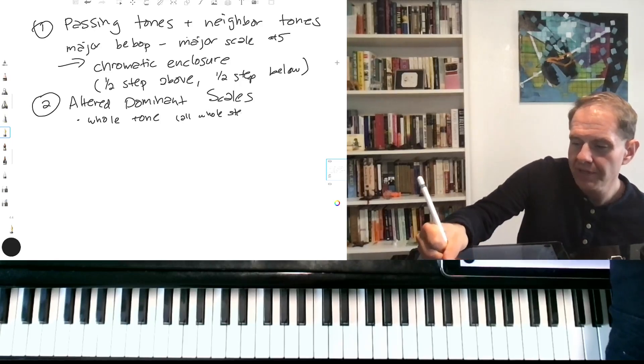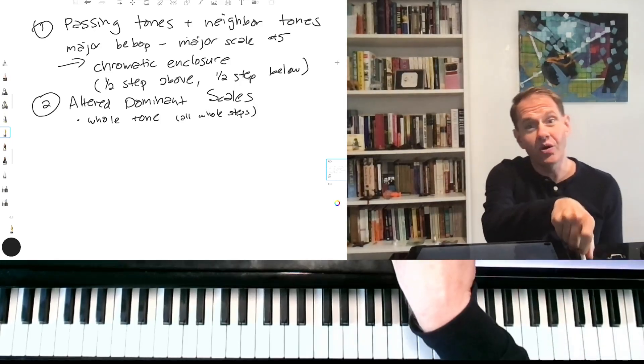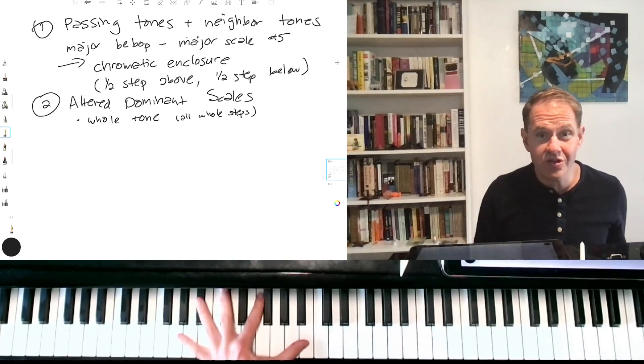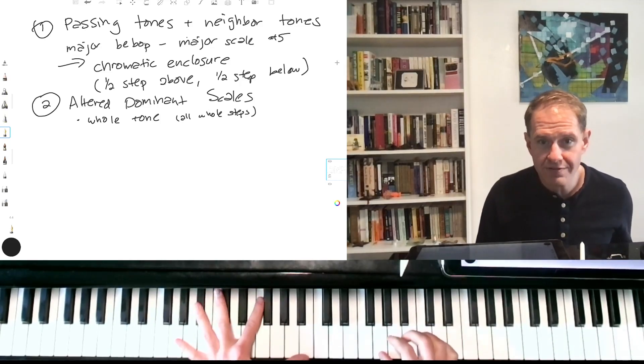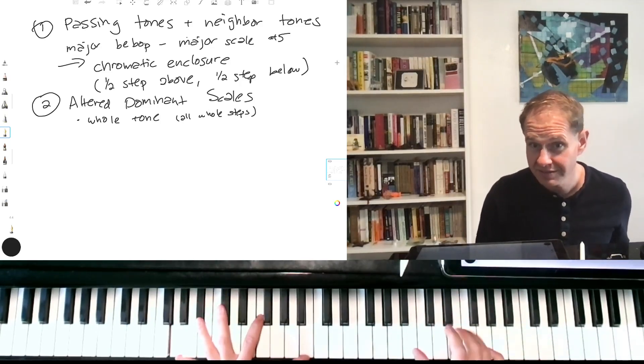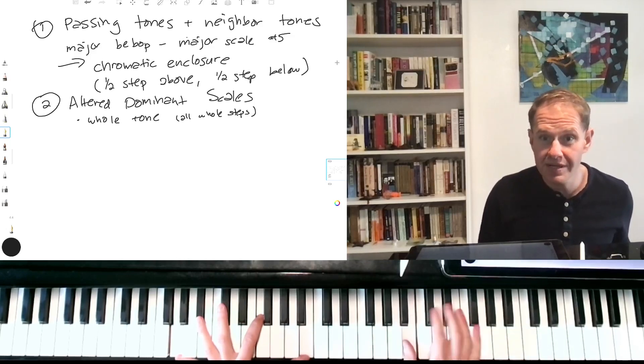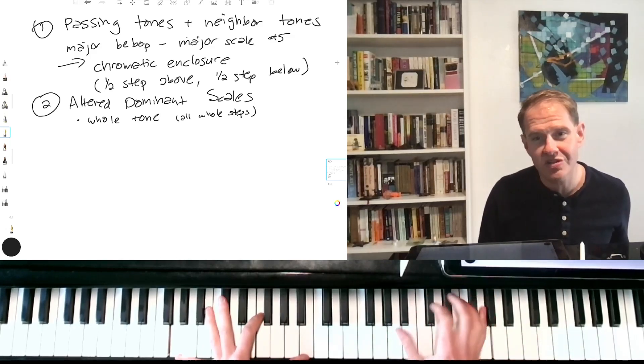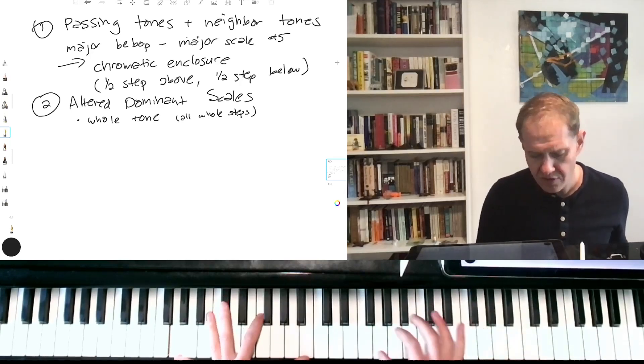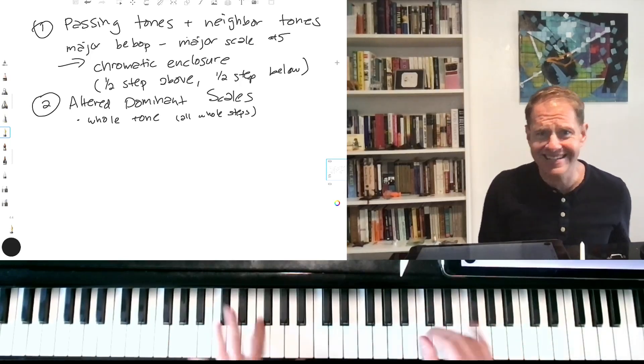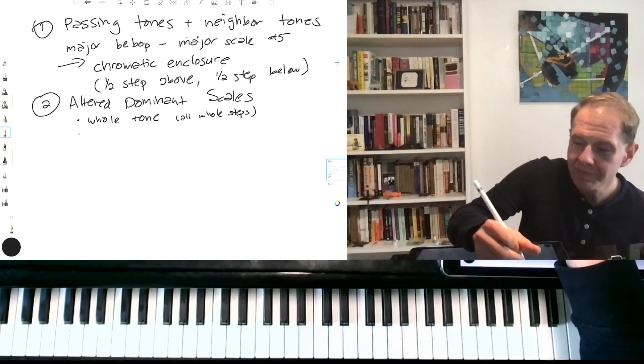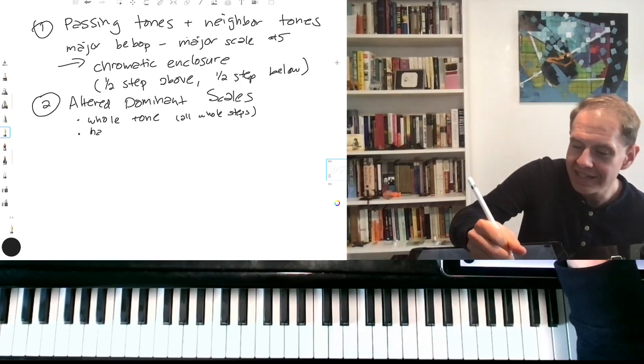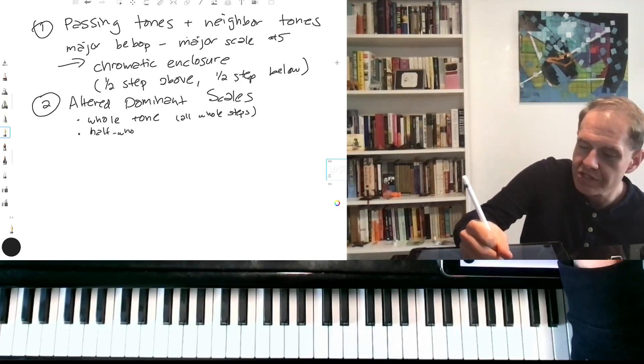The whole tone scale is all whole steps. And remember, these are altered dominant scales because they can only be used for dominant chords. So if I'm doing a whole tone scale starting from G for the G7, I'd go G, A, B, C sharp, D sharp, F, G. Notice there's only six notes in a whole tone scale. Did I say that right? One, two, three, four, five, six. Yeah, I said that right.